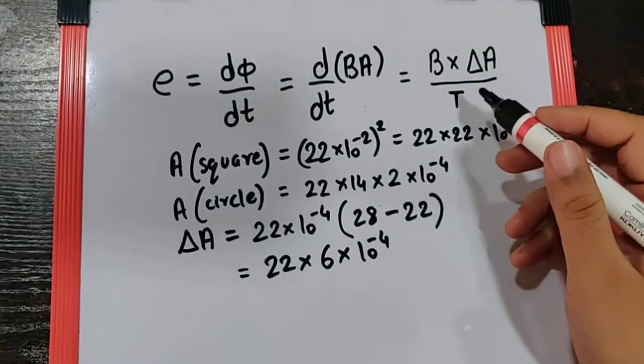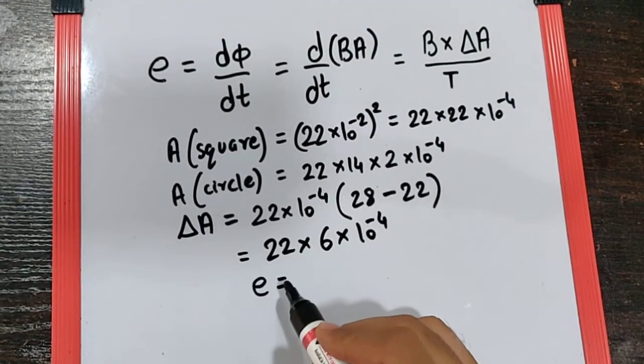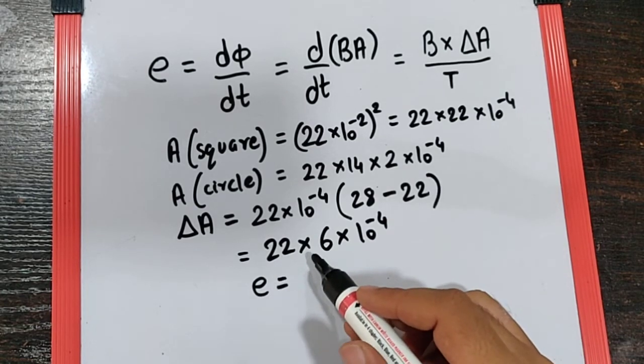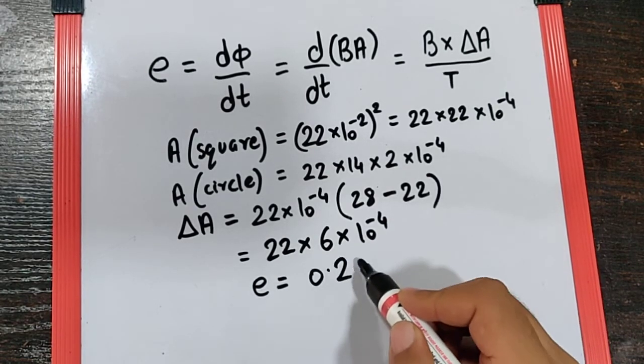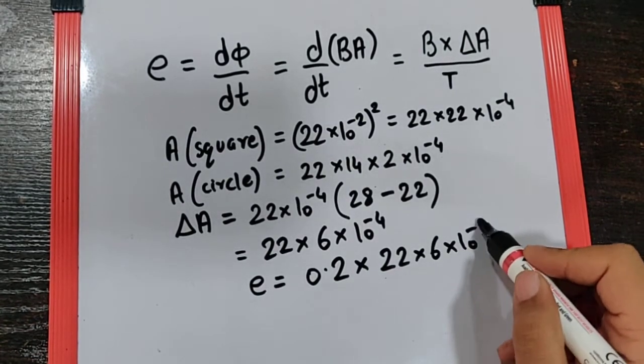So now if we substitute the values over here, we get the EMF is equal to B which is 0.2 Tesla. The change in area we got it as 22 into 6 into 10 raise to minus 4 upon the time taken for the same is 0.4 second.